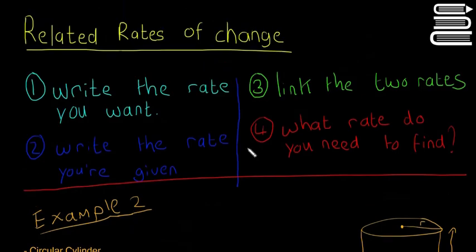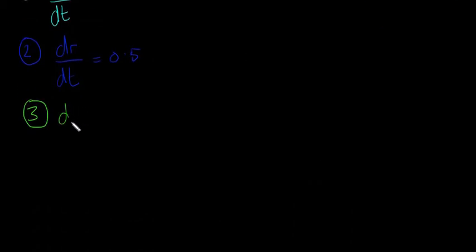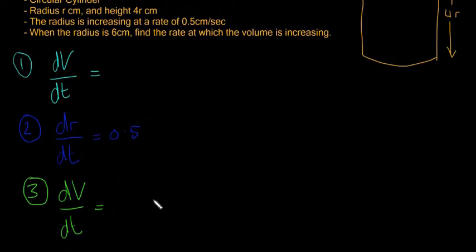Now the next one, link the two rates. Number three, we're going to link the two rates. So we're going to have dV/dt is going to be equal to dr/dt times something in between that's going to give us dV/dt eventually, so it's going to be dV on the top because there's dV on the top here. And it has to cancel with this dr, so it's dV/dr. Does that make sense? That's the way to always try and link them.